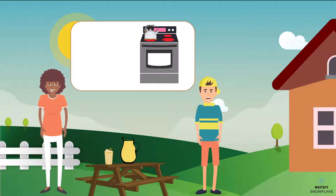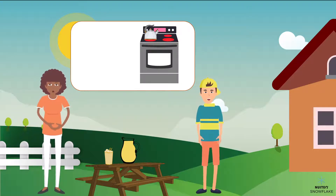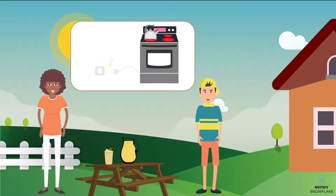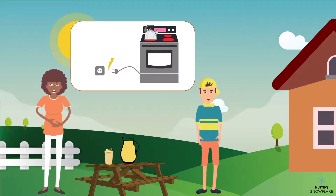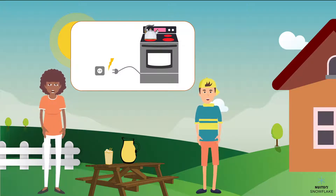But how does the stove get hot? You need to turn it on. The stove is connected to the electricity. So when you turn on the stove, some electricity passes through the cables and into the stove. The electrical energy then gets turned into heat energy.